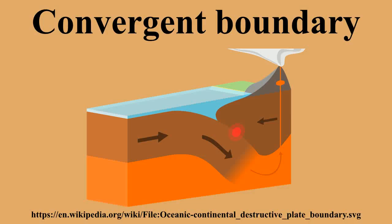When two plates containing continental crust collide, both are too light to subduct. In this case, a continent-continent collision occurs, creating especially large mountain ranges. The most spectacular example of this is the Himalayas. When the subducting plate approaches the trench obliquely, the convergent plate boundary includes a major component of strike-slip faulting within the overriding plate. The best example of this is the Sumatra convergent margin, where orthogonal convergence on the Sunda megathrust is occurring intermixed with movement on the Great Sumatran Fault.